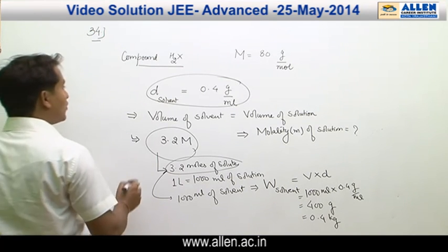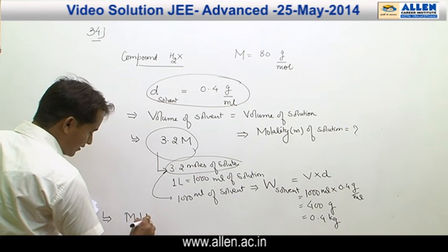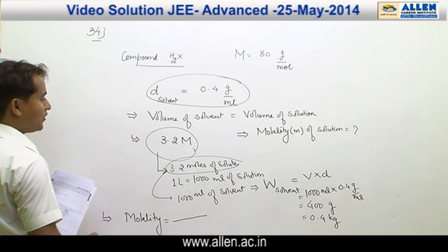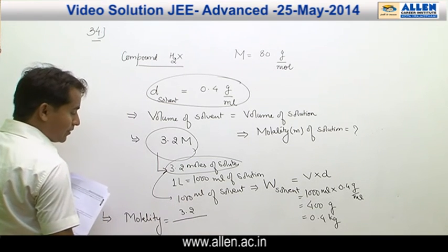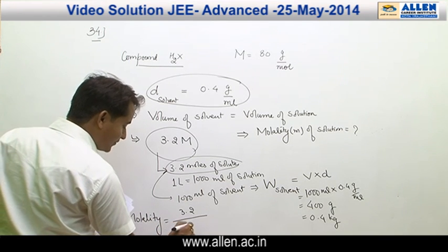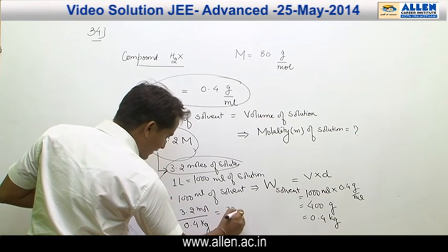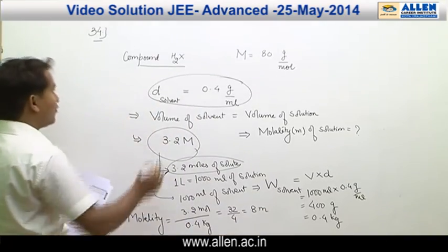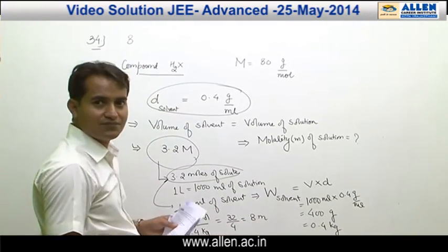What is molality of solution? Molality is equal to number of moles of solute, number of moles are 3.2, divided by mass of solvent in kilogram, 0.4 kilogram. It is 32 by 4 or 8 M. Therefore, answer of this question is 8.